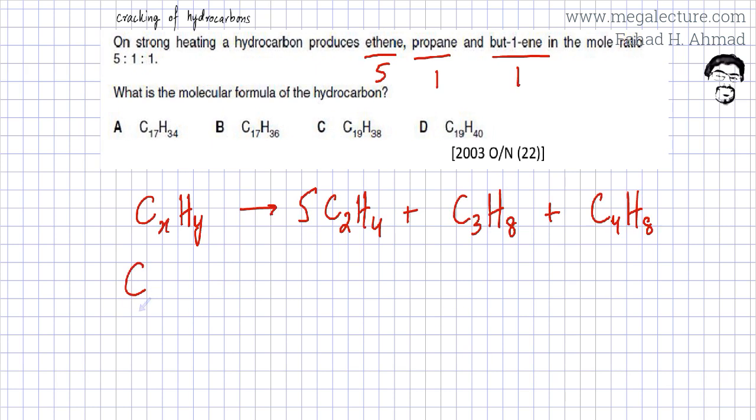So in your molecule you have a total of 17 carbons. And let's count the number of hydrogens - you have 20 hydrogens over here, 8 over here, that's 28, plus another 8, that's 30, that's going to be 36 hydrogens.